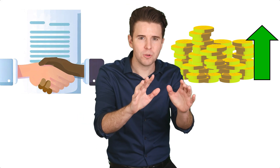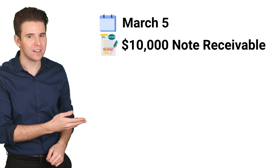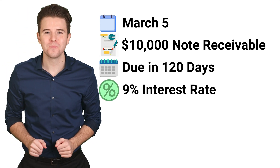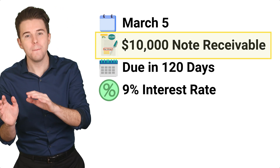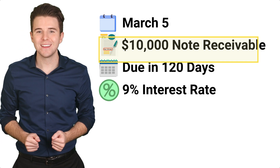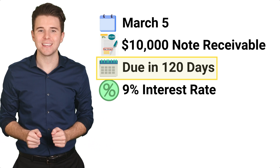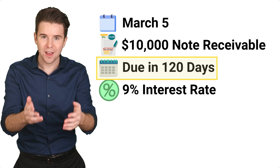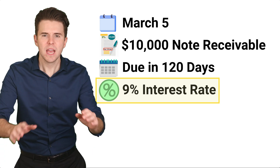Now I want to run through a notes receivable example. So let's say on March 5th, we get a $10,000, 120-day, 9% note from a customer. The $10,000 on the note receivable is the principal or amount of the note. The 120 days is the period of time until the maturity date, which is when the $10,000 is repaid with interest. The 9% is the annual interest rate.